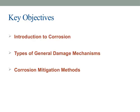Let's take a closer look at the key objectives for today's discussion. First, we'll start with an introduction to corrosion, which is essential for understanding why it's such a challenge in various industries. Then we'll explore the different types of damage mechanisms that corrosion can cause, helping us identify how it impacts materials over time. Finally, we'll cover corrosion mitigation methods — the strategies and techniques used to prevent or reduce corrosion, ensuring the longevity and safety of structures and equipment.